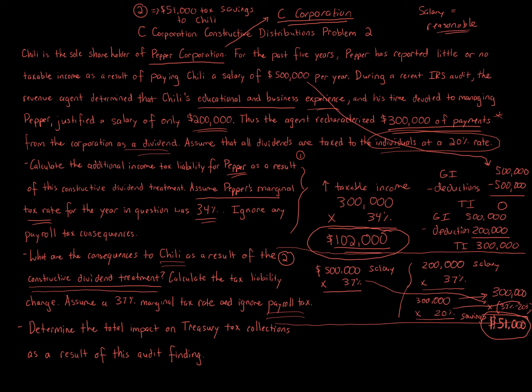The last question is, determine the total impact on Treasury's tax collections as a result of the audit finding. So basically what it's asking is, the corporation has to pay additional taxes of $102,000. So in number one, taxes went up, the additional tax liability for Pepper Corporation went up by $102,000, and that's what we found in number one.